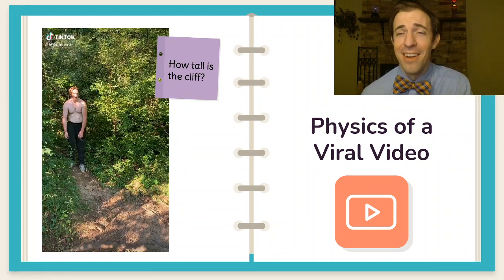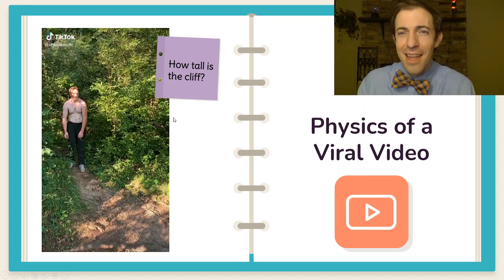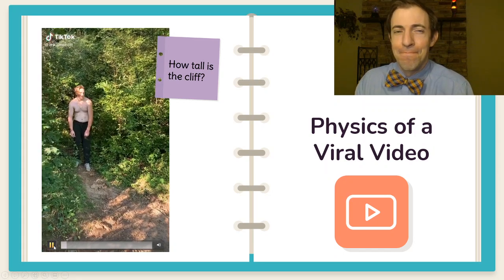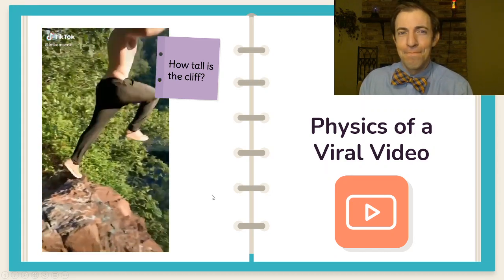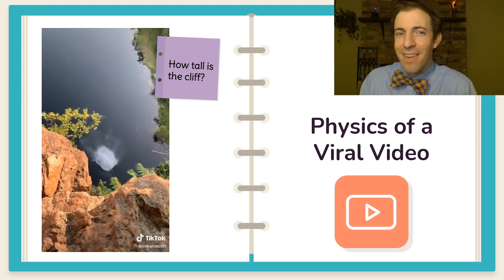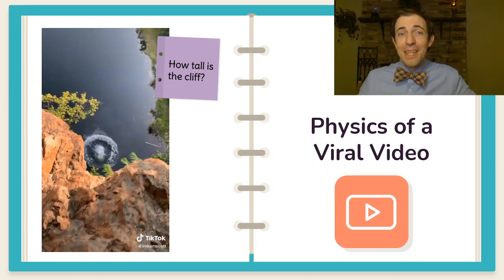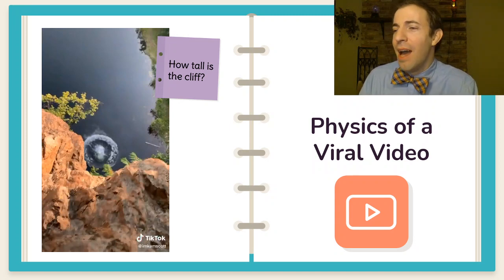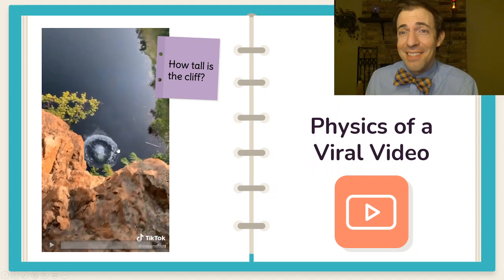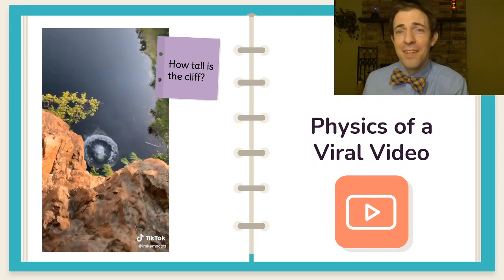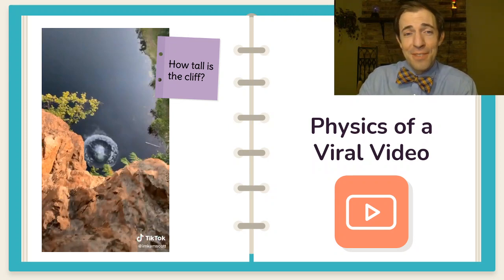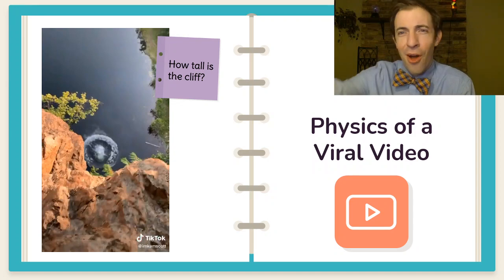First is a physics of a viral video. Students love seeing videos that they have seen elsewhere being used in class and this is a video on TikTok that made the rounds earlier this year. Now the natural response of that for any student or really any human is how tall was that cliff? How high did he jump from? Well a physicist knows that all you really need is the time of that fall to calculate the height if you can use kinematics and free fall with the assumption of an initial velocity of zero and acceleration of gravity of 9.81. Now the task for the students there is to figure out what they need to measure in order to solve for that unknown.